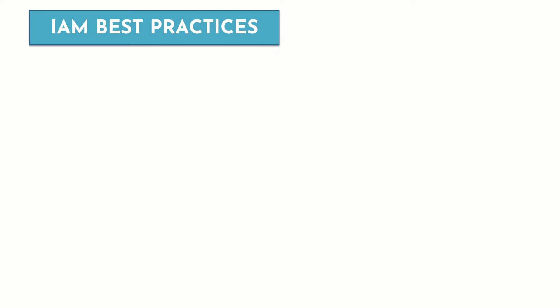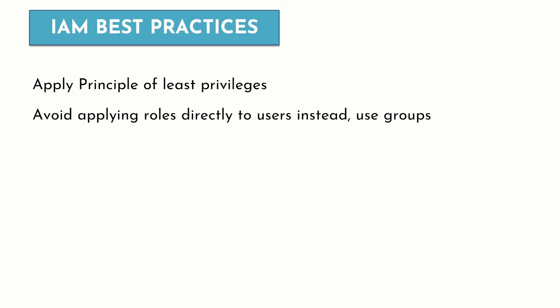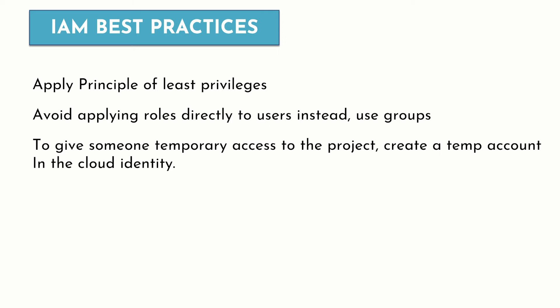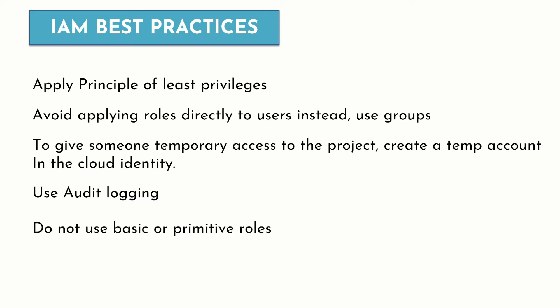While implementing identity and access management, you should always apply the principle of least privilege, which restricts users or applications from doing more than they are supposed to. You should avoid applying roles directly to users — instead, use IAM groups, assign roles to those groups, and add users to the groups. To give someone temporary access to a project, create a temporary account in Cloud Identity. You should use audit logging, which helps answer questions such as who did what, when, and where. Basic or primitive roles are not recommended.